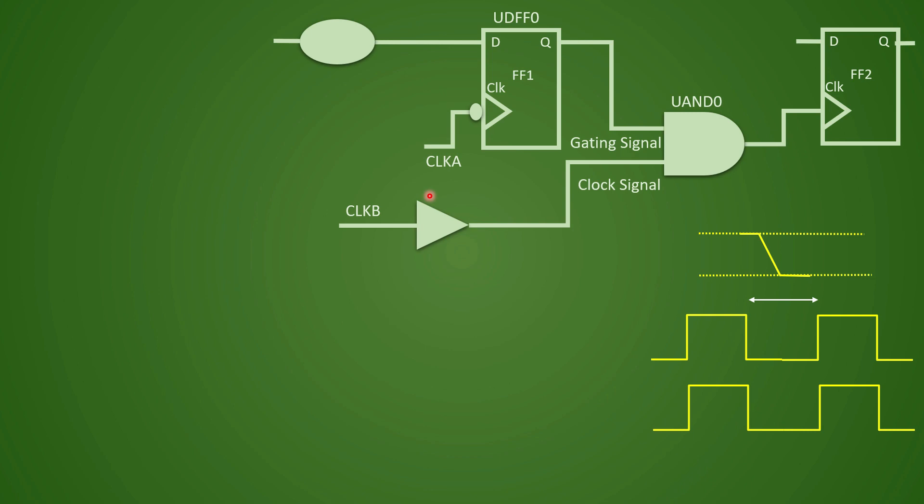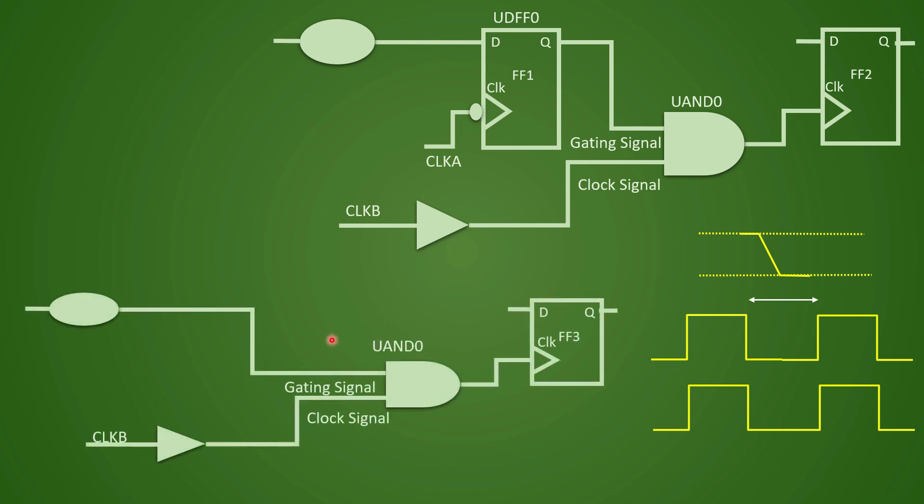So in this diagram, if you see, this AND gate has an asynchronous signal and this gating signal is not coming as an output of flip flop, but this one is coming as an output of flip flop.